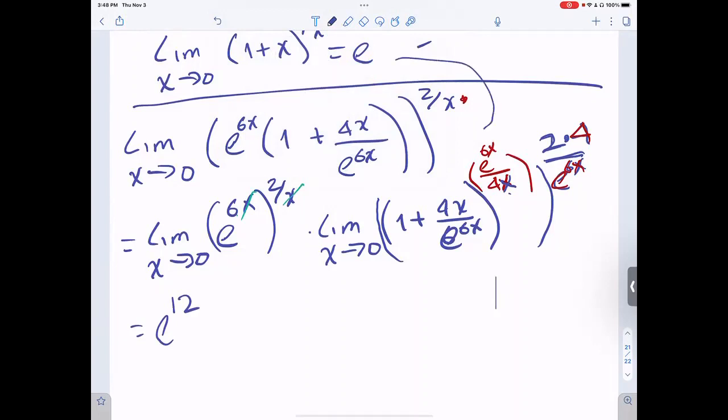Remember, by this identity, the limit when x approaches 0 of this is e. Now we have e times e. The whole thing is e,